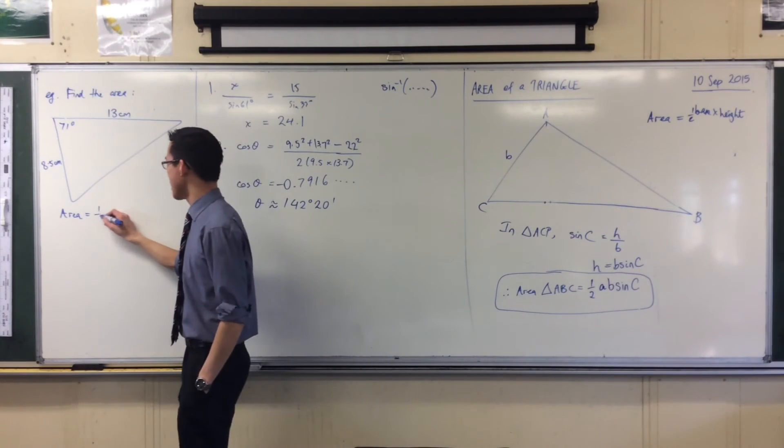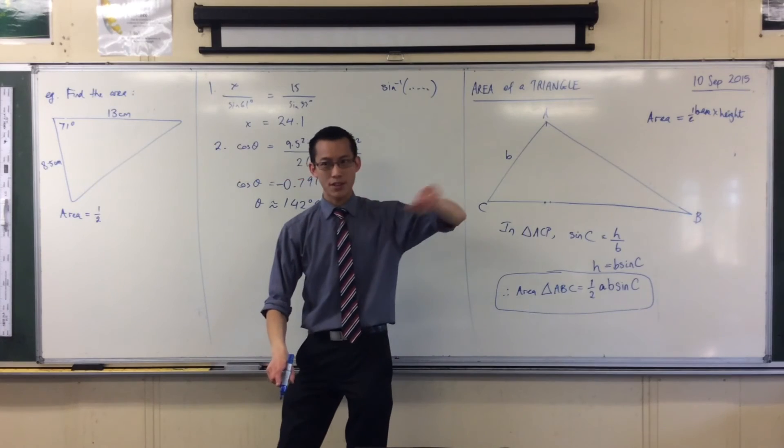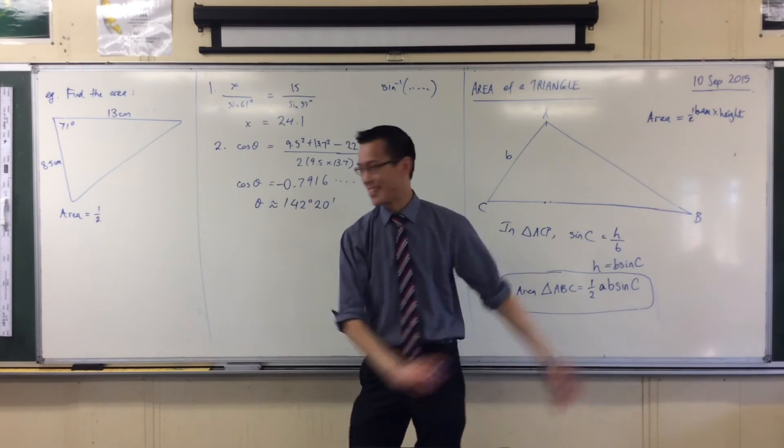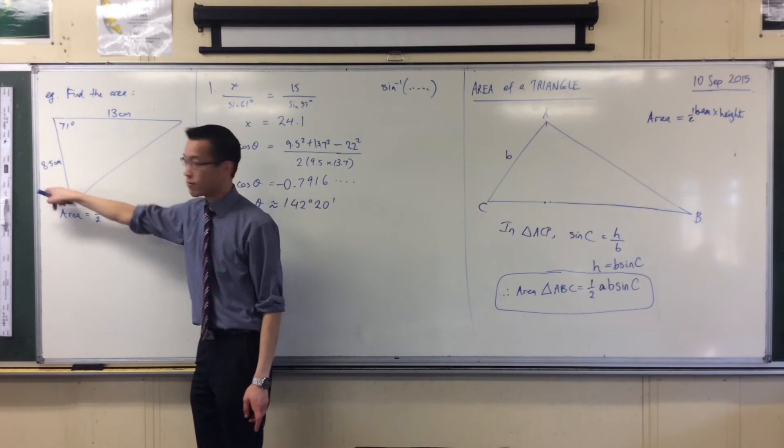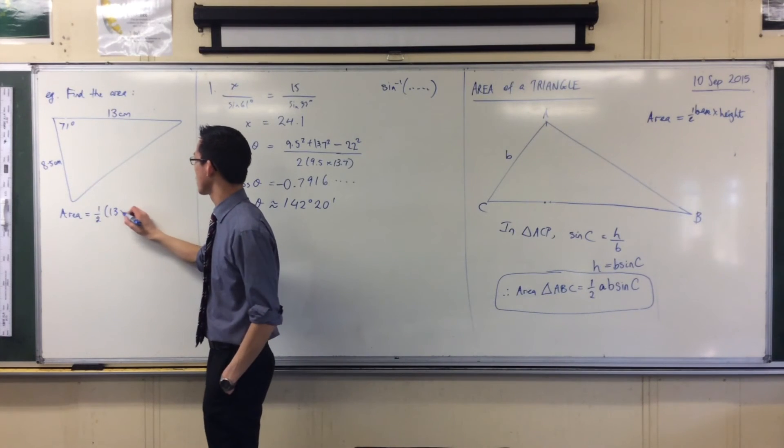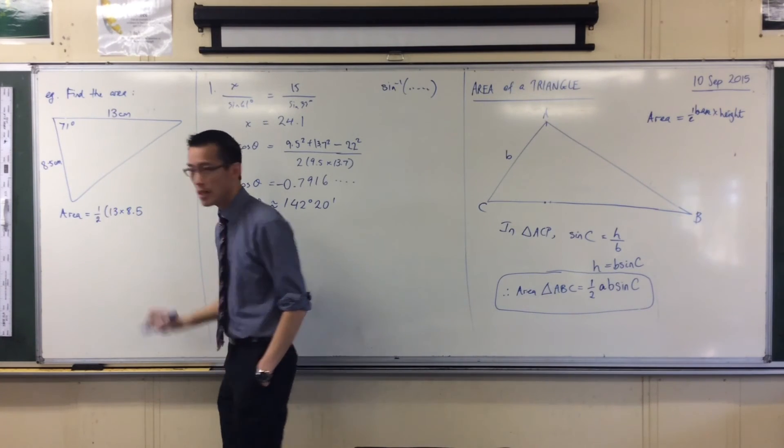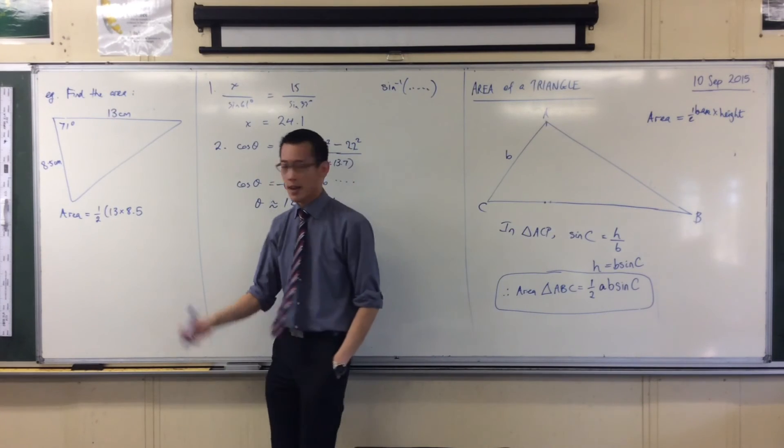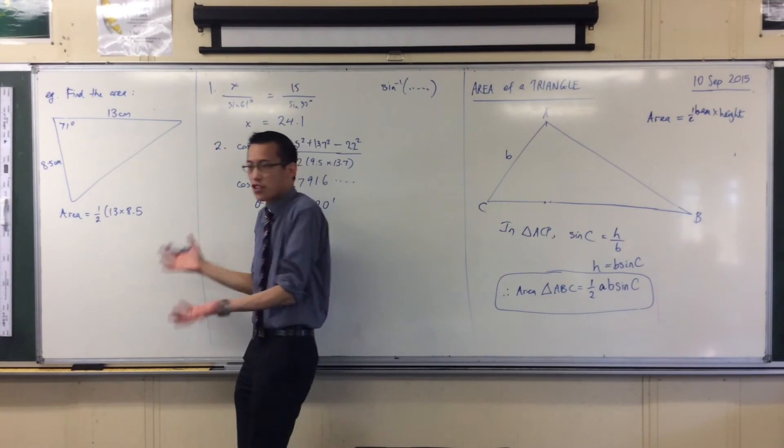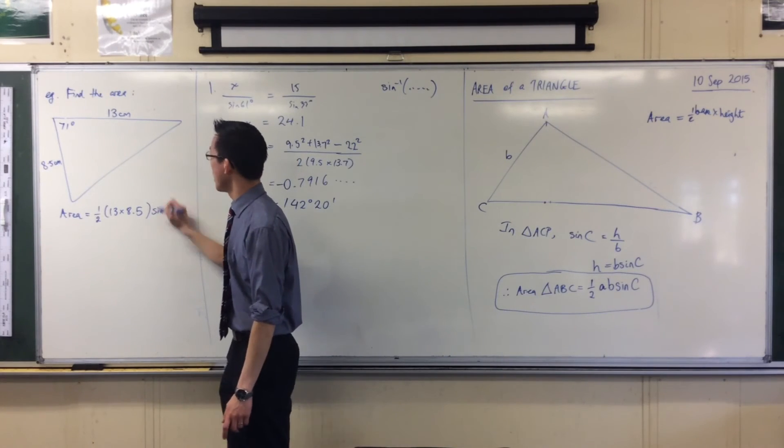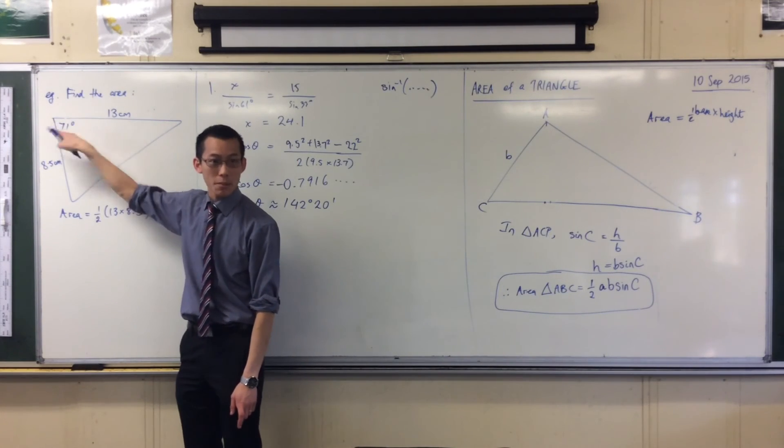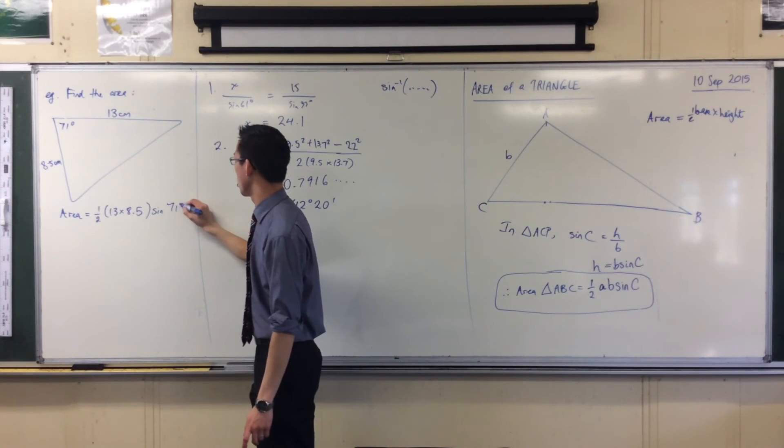I'm going to start by saying, area equals half A, B sine C. It almost has a nice ring to it. It's very easy to remember. So, here are my A and B. They're the two lengths that I have in my triangle. Now, it's really important that you recognize, C is not just any angle in the triangle. It has to be the one in between A and B. It's got to be that one in between, 71 degrees.